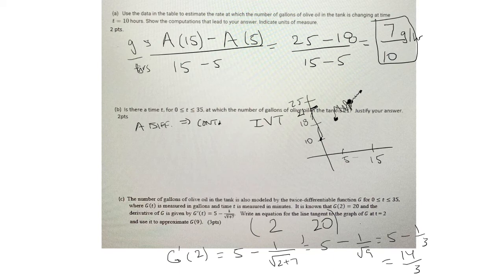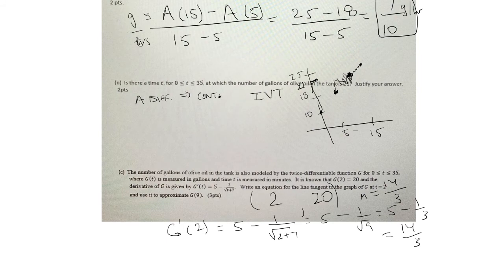And I can just write this as 14 over 3. Okay, so g prime of 2 represents the slope of the tangent line, which is exactly what we want. So when you have a point, you have a slope, you can use the point-slope formula.